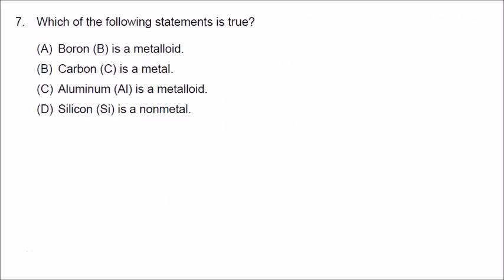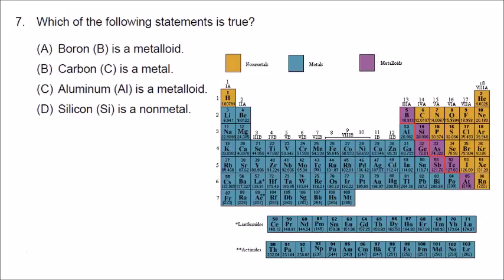Number seven: which statement about metals, nonmetals, and metalloids is true? Boron is a metalloid, but carbon is a nonmetal, aluminum is a metal, and silicon is a metalloid. So only A was the correct answer.